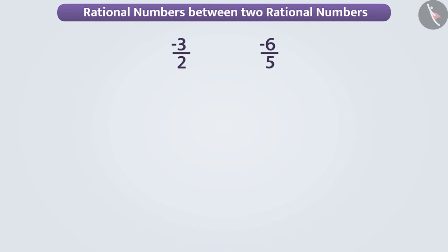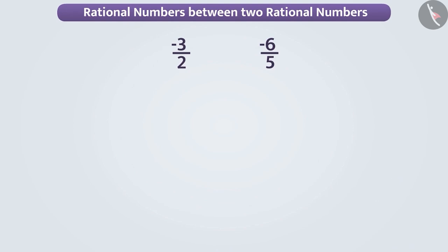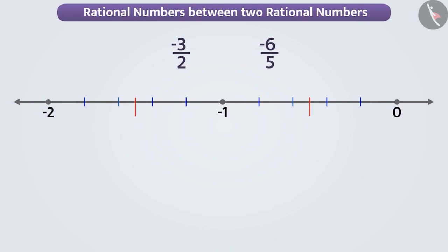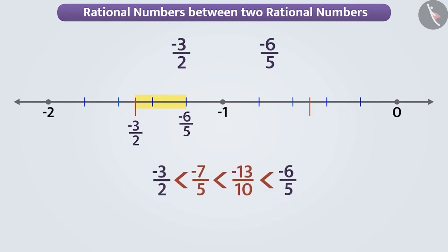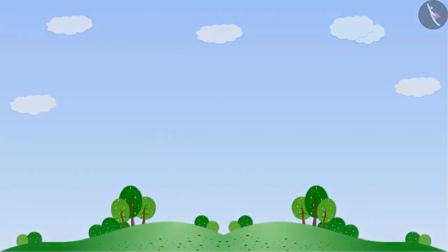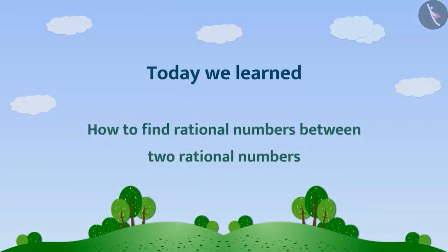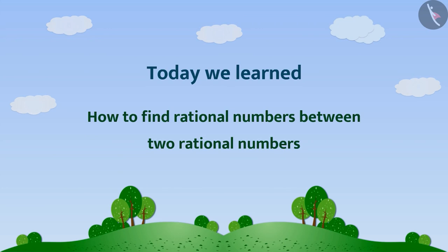We can also use the number line to find rational numbers between two numbers. For example, if we have to find the rational numbers between minus three by two and minus six by five, then we have to find the position of these two numbers on the number line and see which rational numbers come between them. We will explore this topic in more detail in the next video. Today, we learned how to find rational numbers between two rational numbers, and in the next video we will solve some examples related to this.